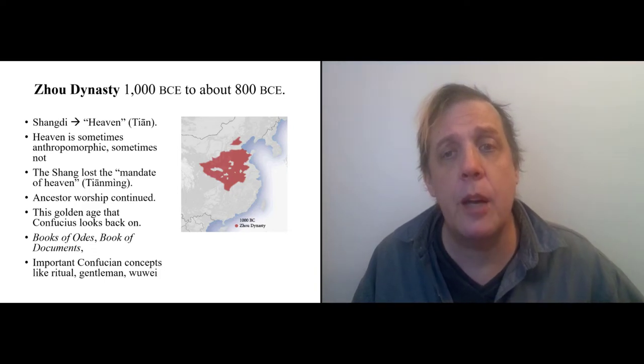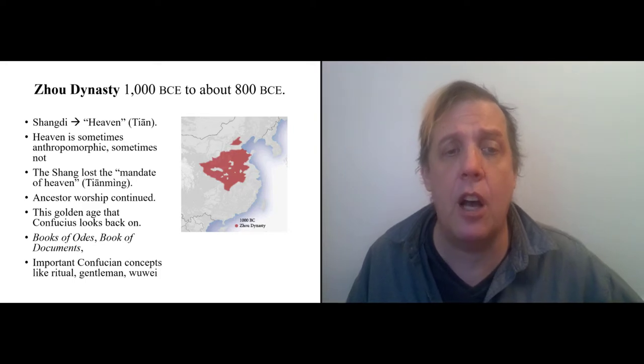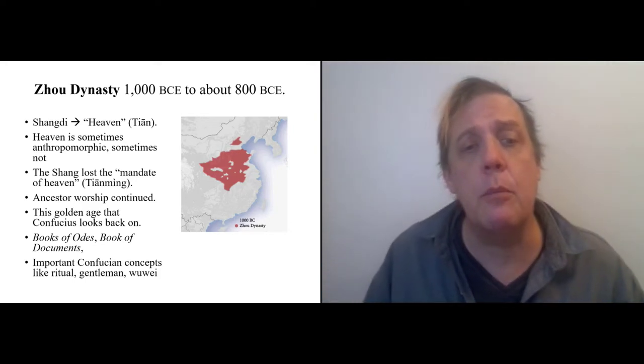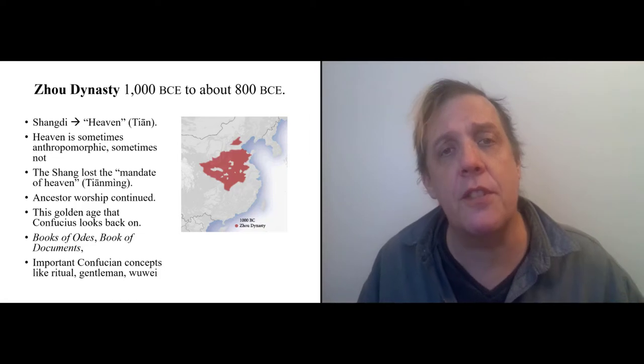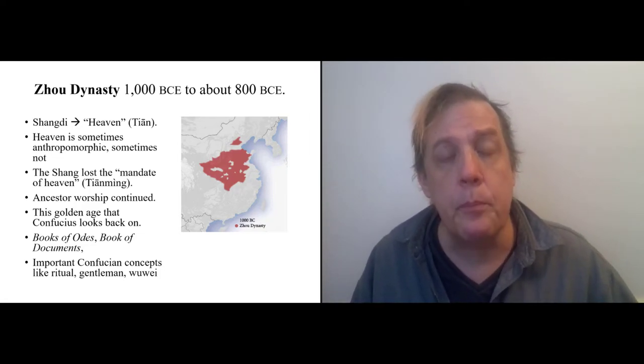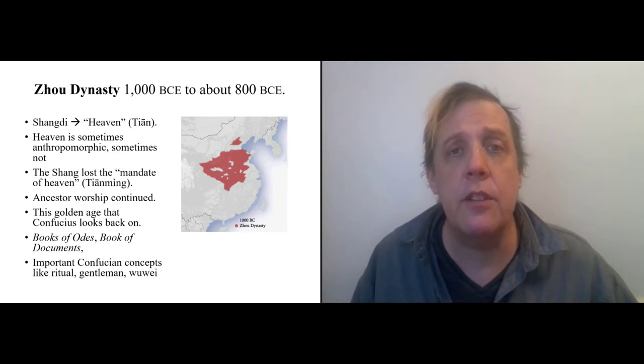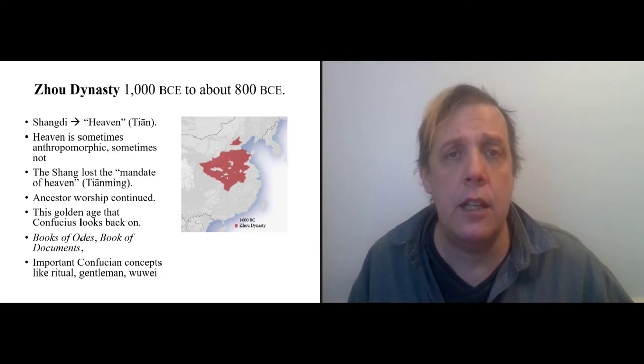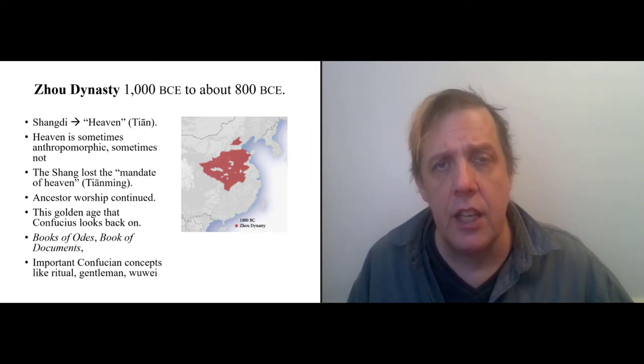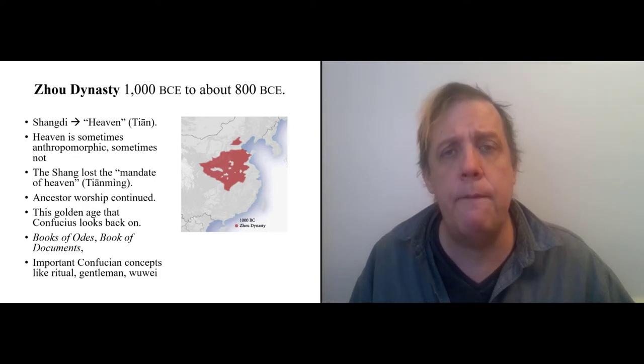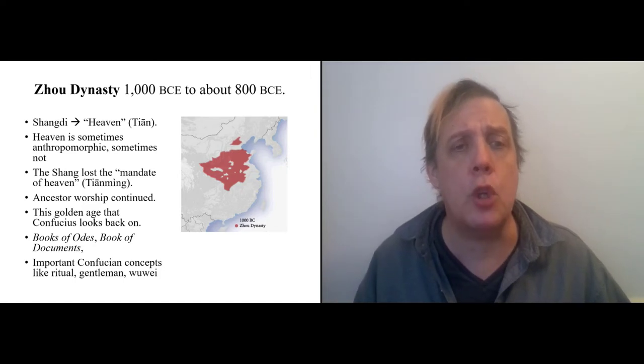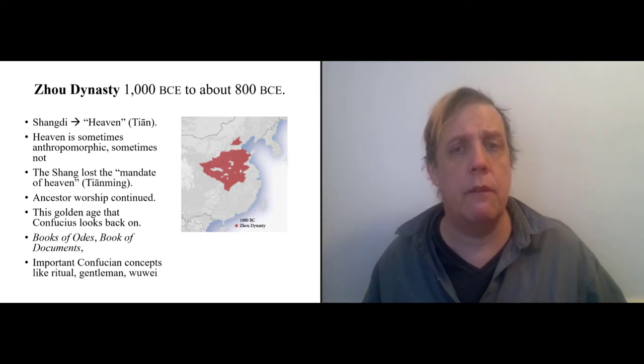And when he thinks of literature, he thinks of books that were written during this time, including especially the book of Odes, which is a collection of song lyrics, poetry, and the book of documents. Other crucial concepts for Confucius were developed at this time, including the idea of ritual, of gentleman, of Wu Wei, and we'll be discussing all of these crucial concepts later on.